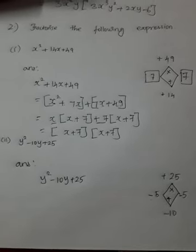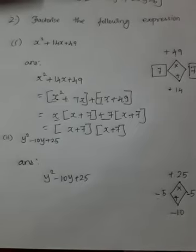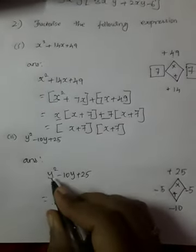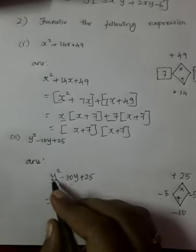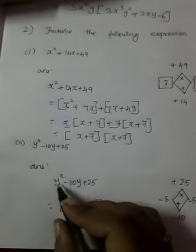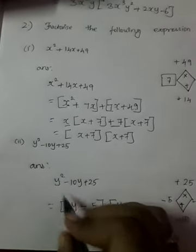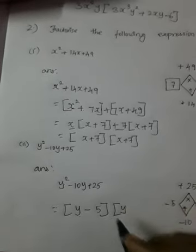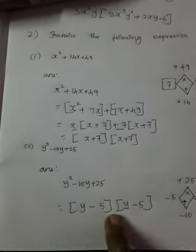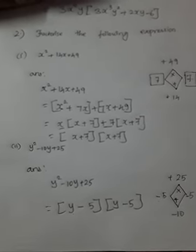So the factors are −5 and −5. You can follow the full grouping method, or use the direct shortcut: y squared minus 5y minus 5y plus 25, group as y(y − 5) − 5(y − 5), giving (y − 5)(y − 5). For a 5-mark question use the full method; for a 2-mark question you can write the answer directly.